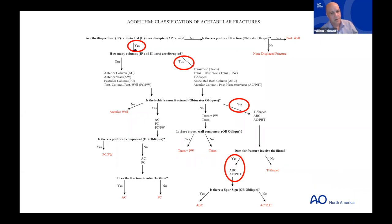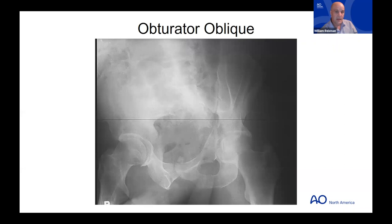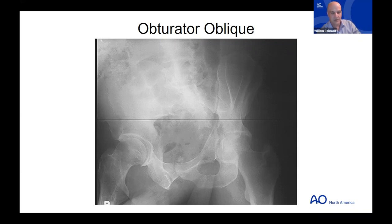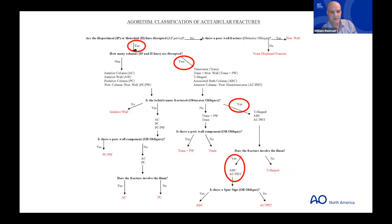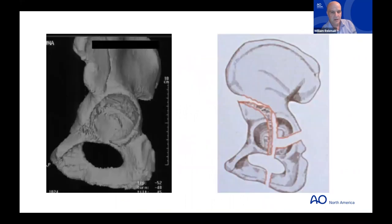Now the obturator oblique is critical. For an associated both-column fracture, you'd see a spur sign — the joint medializes away from the ilium because the joint is no longer connected to the ilium and SI joint at all. On the obturator oblique, do we see a spur sign? No — we do not. So this must be an anterior column posterior hemi-transverse fracture.